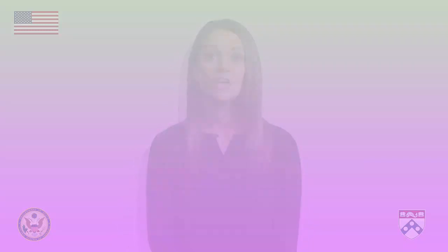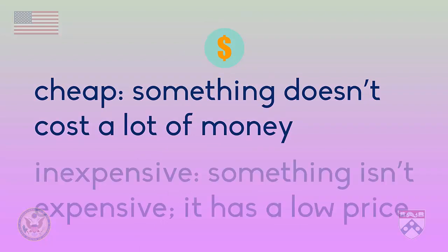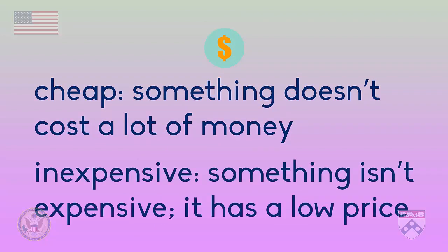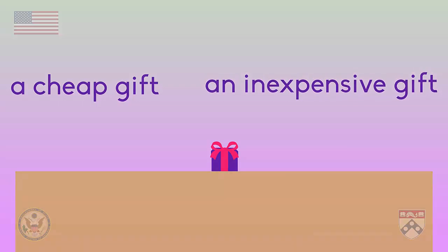Let's look at the denotations for a couple of words: cheap and inexpensive. If we look them up in a dictionary, we'll see something like this. Cheap means that something doesn't cost a lot of money. Inexpensive means that something isn't expensive or it has a low price. So the denotations of both of these words are very similar. If I'm going to bring a small gift to a party, we could call it a cheap gift or an inexpensive gift, and the basic meaning would be just about the same. In other words, what I'm saying is the same if I choose either cheap or inexpensive.